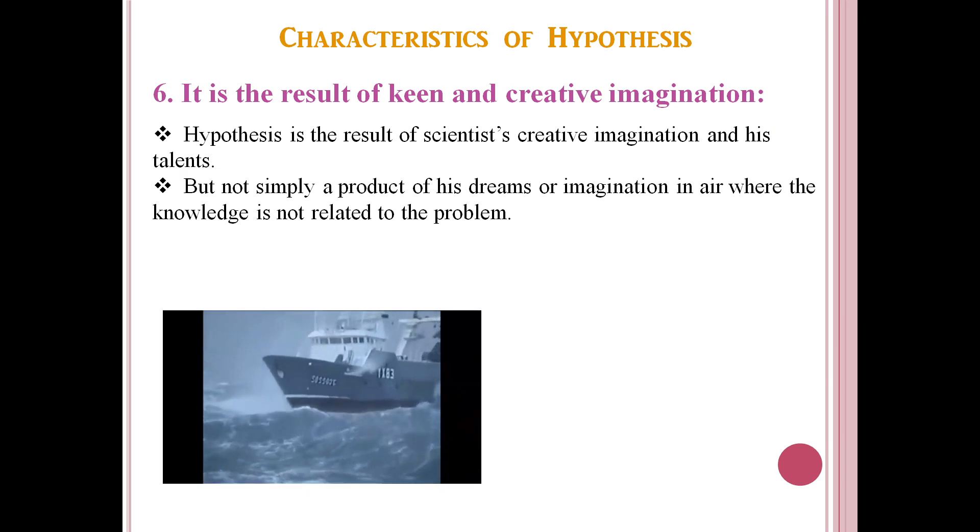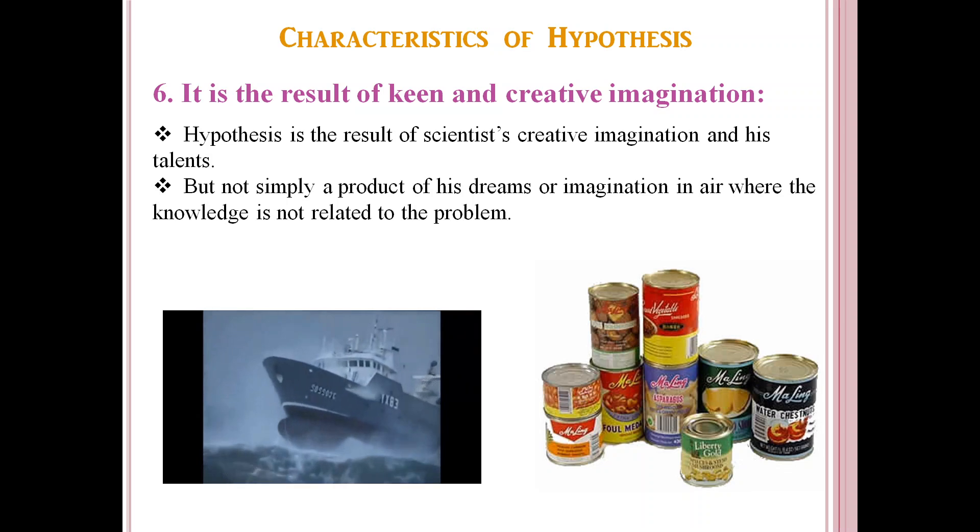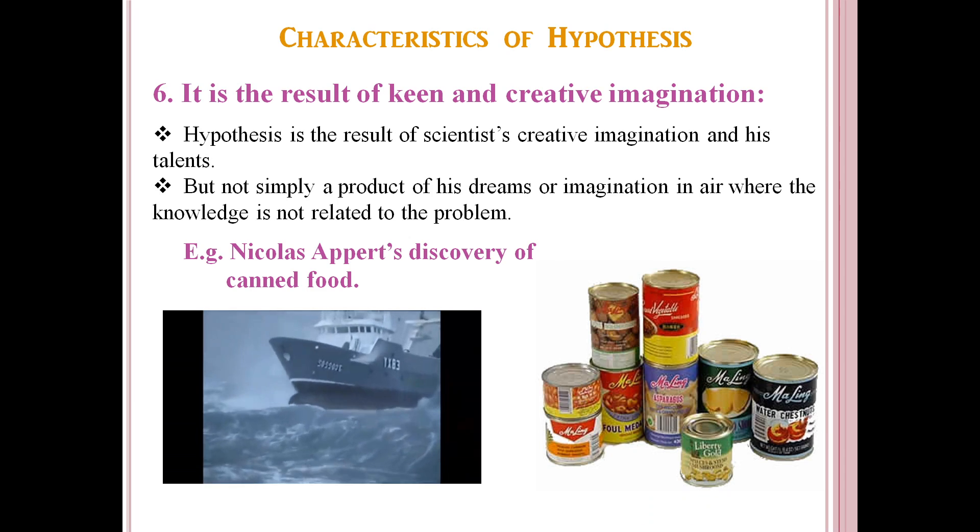Let us see how the canned food was discovered by Nicholas Eppert. In the year 1795, Nicholas Eppert observed that Napoleon Bonaparte regularly shipped food for his military men. But the food used to get spoiled by the time it reached the military men. So, Nicholas started wondering why this is happening and a thought came to his mind that if the food is boiled and sealed in a glass jar with a cork, then it will not get spoiled. This was his creative imagination. And he had to conduct an experiment to see whether whatever he has put forth as a solution is true or not.